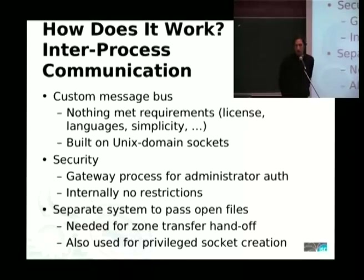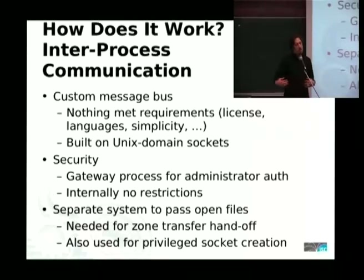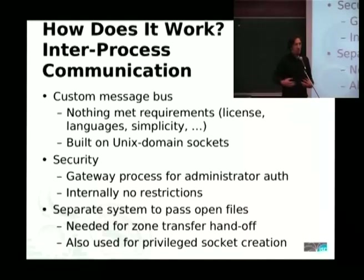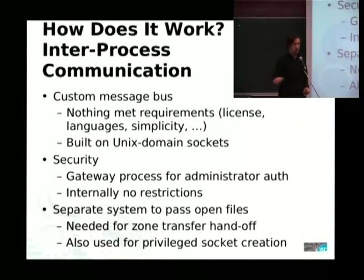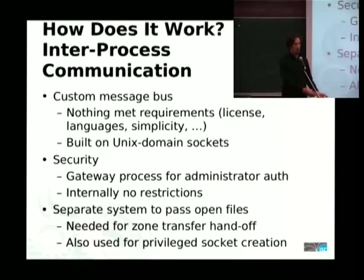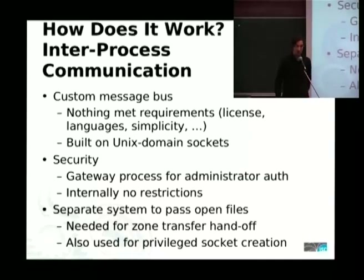For security of our message bus, we have a gateway process to prevent users who aren't authorized from accessing the system. But once you're in, you're in — these are cooperating processes, not wild views on the internet, so we don't have authentication between the tasks. We also have a separate type of IPC which we use to pass open file descriptors around. This arose because if you're doing a zone transfer, the requests will come into your authoritative server because they all sit on the same port and IP address — that's the design of the protocol — but we wanted another process to actually do that work. In modern Unix you can freely pass open file descriptors between processes, and the documentation says you can do this in Windows too, but we don't actually support Windows yet.